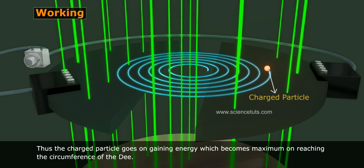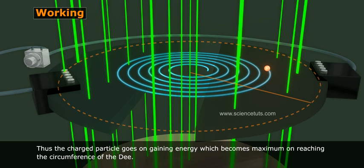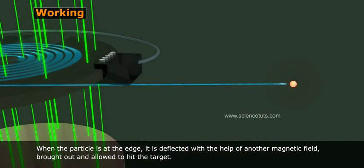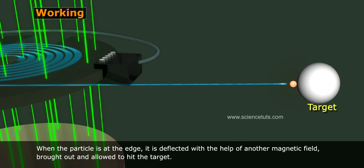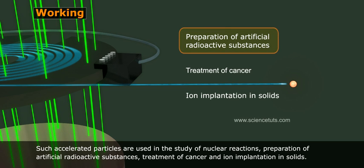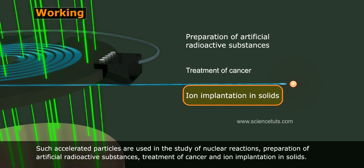Thus the charged particle goes on gaining energy which becomes maximum on reaching the circumference of the D's. When the particle is at the edge, it is deflected with the help of another magnetic field, brought out and allowed to hit the target. Such accelerated particles are used in the study of nuclear reactions, preparation of artificial radioactive substances, treatment of cancer and ion implantation in solids.